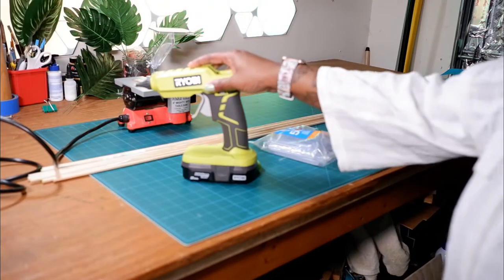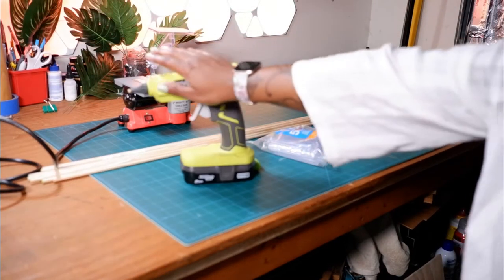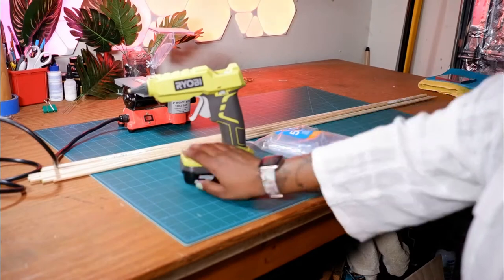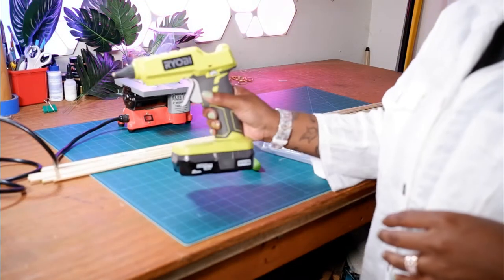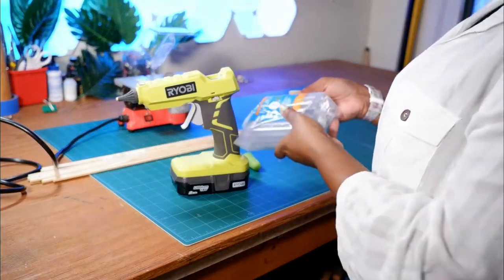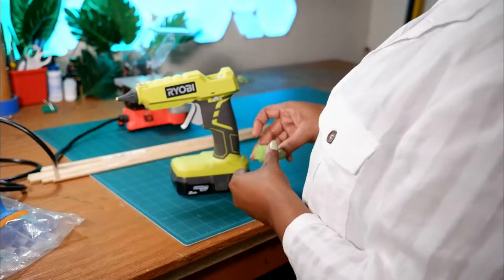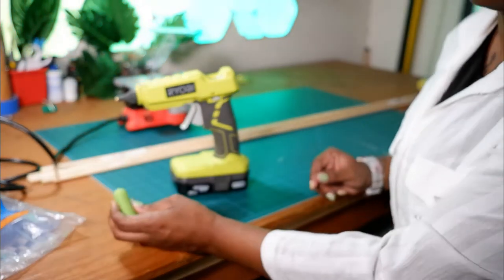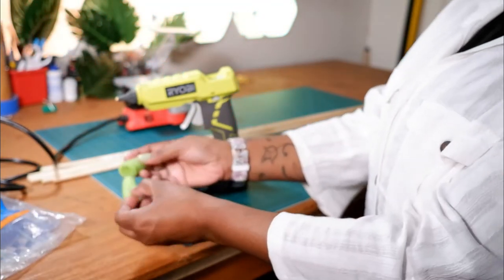Next, we're going to need a hot glue gun. I have this Ryobi one because it's powerful and it doesn't have any cords. So that's great. We're also going to need some glue sticks and some fingertip protectors.